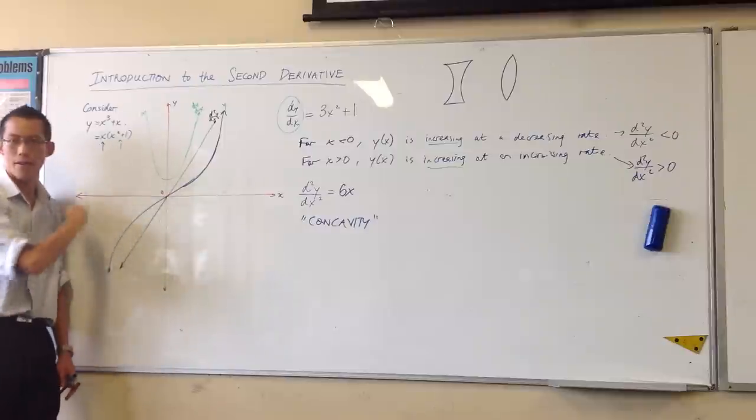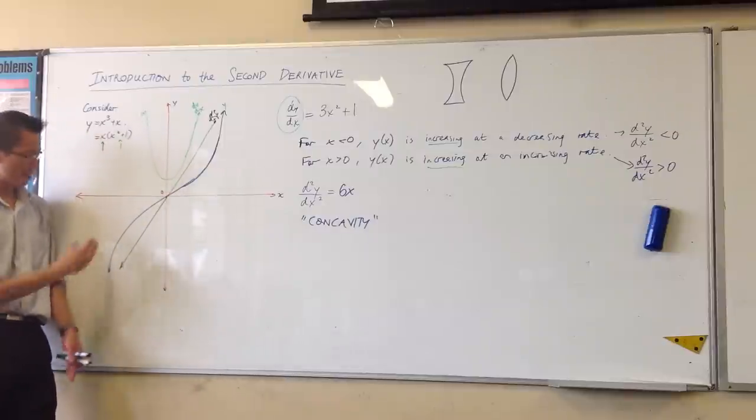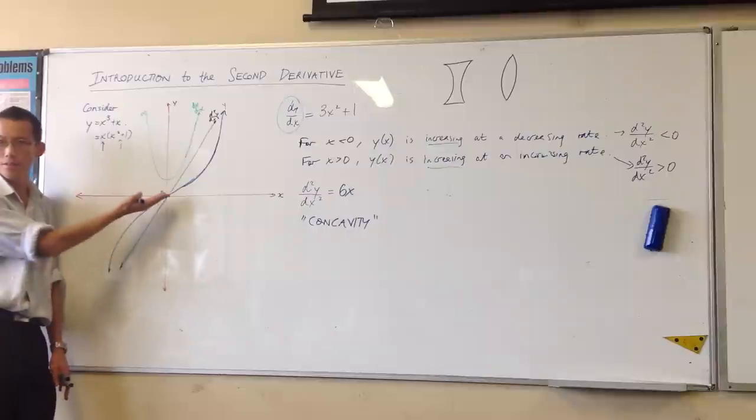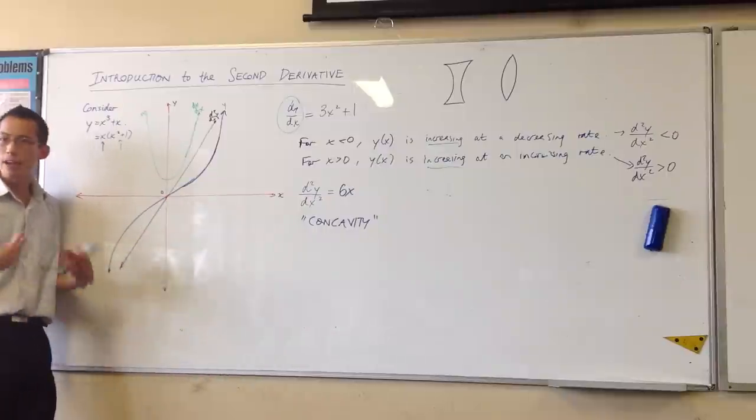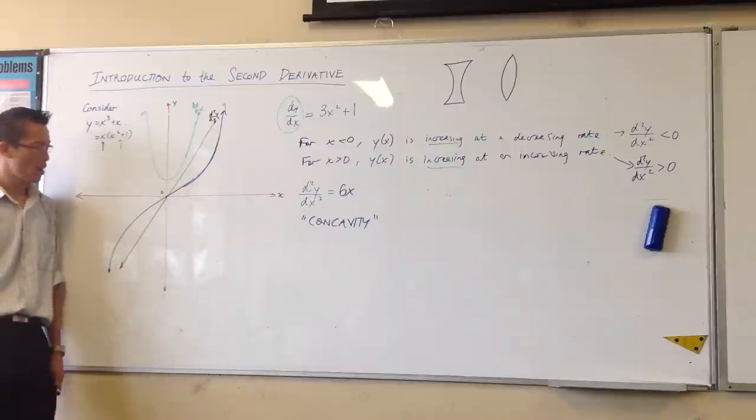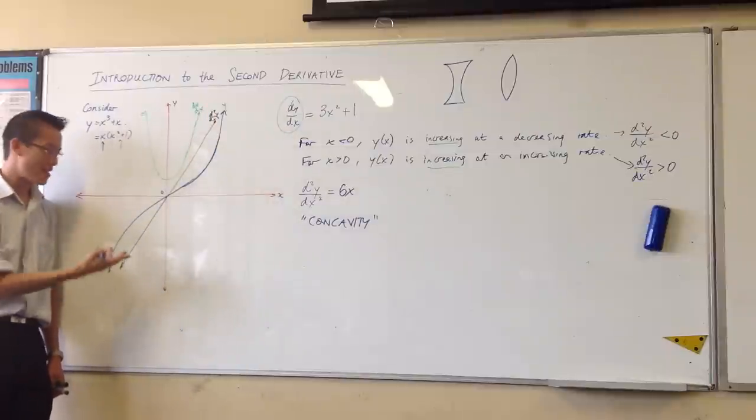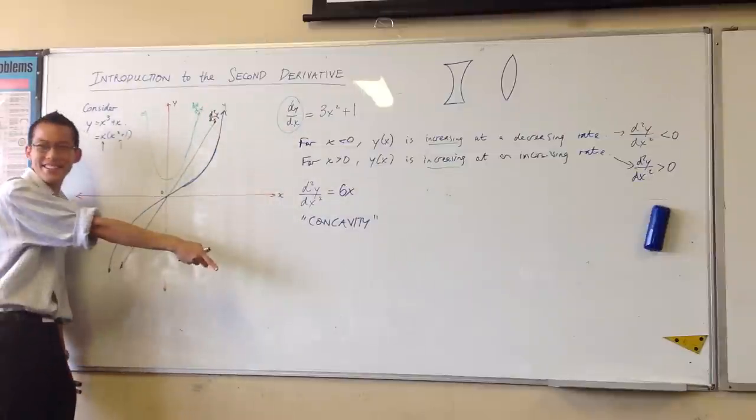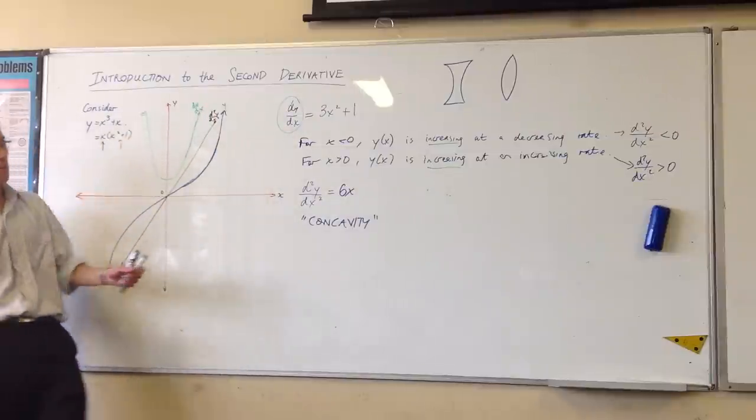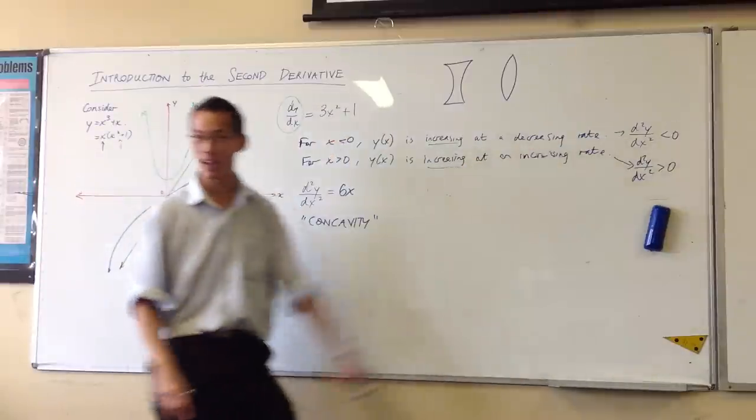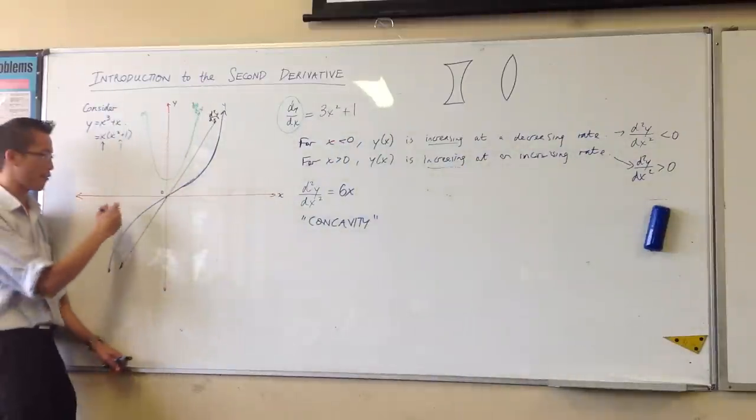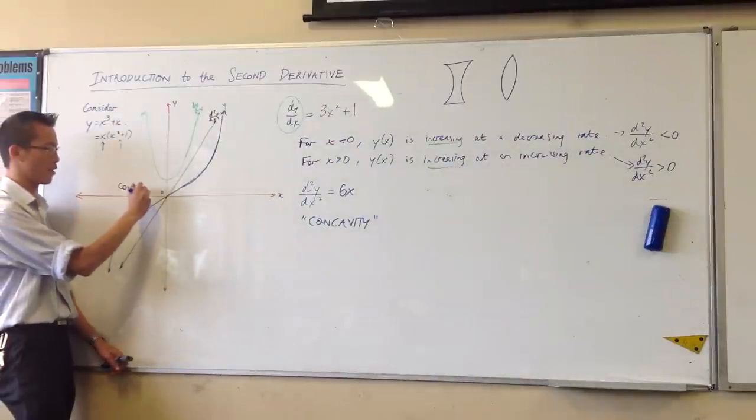Which direction is it going in? Which direction is it facing? Well, if you cover the rest of the graph and you just think about this part, it's kind of pointed in that direction. But we're just thinking about positives and negatives. So I would call this part of the graph concave down.